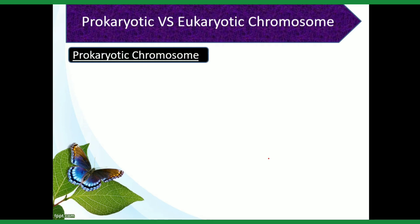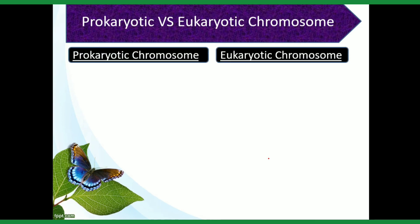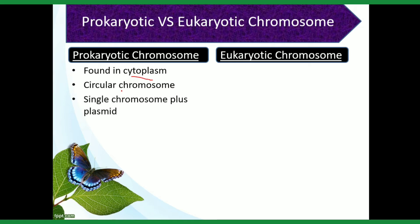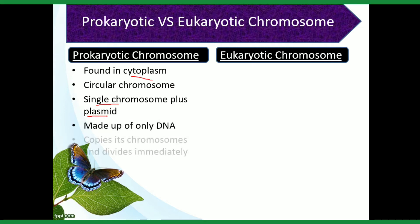Now, prokaryotic versus eukaryotic chromosomes. The prokaryotic chromosome is found in the cytoplasm — there is no nucleus in a prokaryotic cell, so it is found only in the cytoplasm. It is a circular chromosome. There are two types of DNA: one is a single main chromosome, and the extra chromosomal DNA is called a plasmid. The prokaryotic chromosome is made up of only DNA, copies itself, and divides immediately.